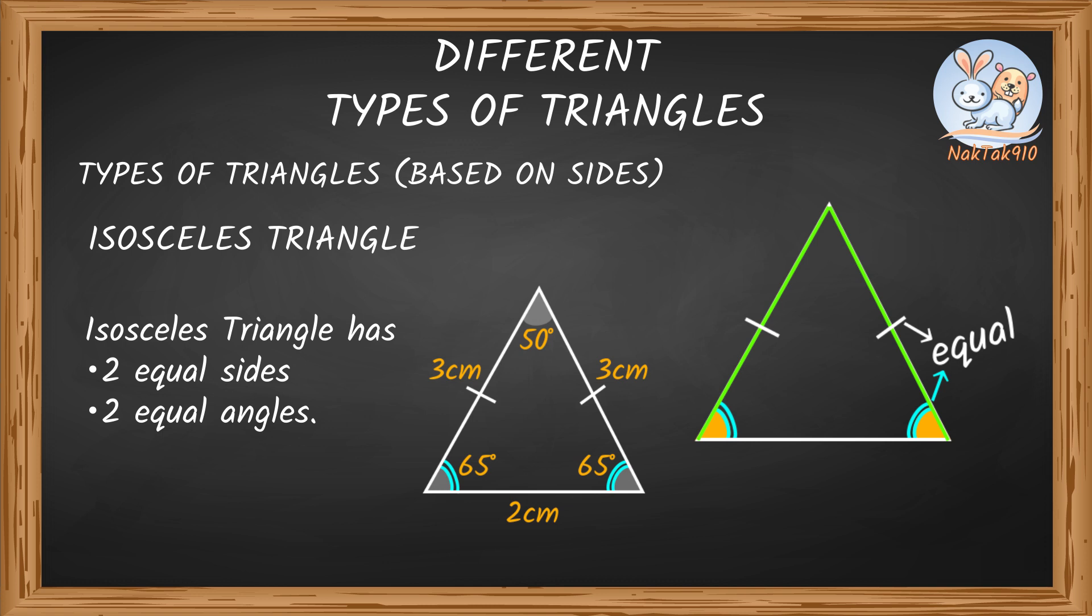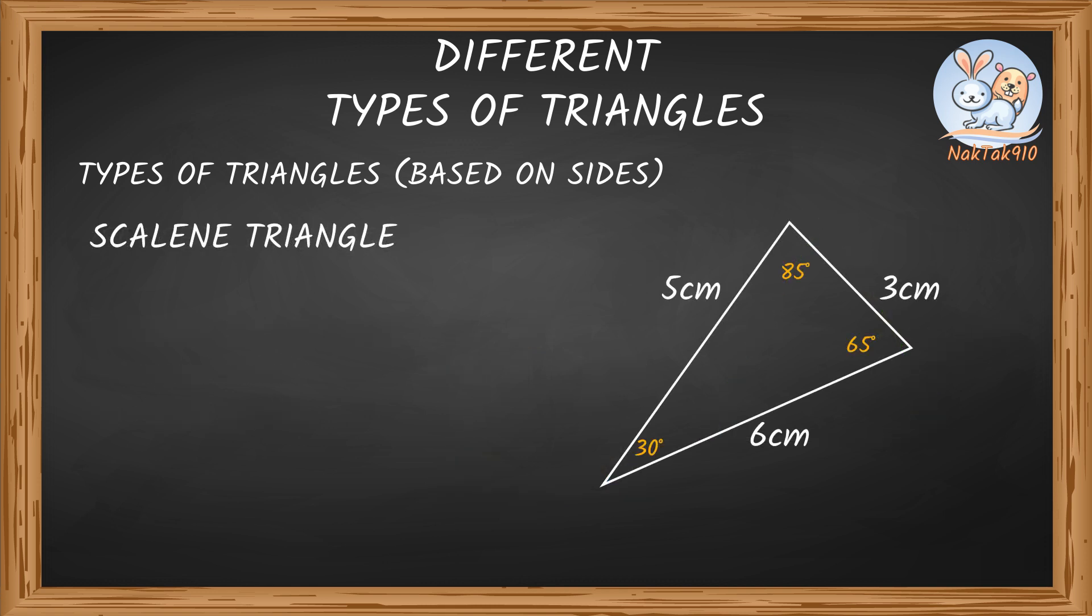Now we learned about three sides are equal, that's equilateral triangle. Two sides are equal, that's isosceles triangle. What if all the sides are different and not equal to each other? Yep, you guessed it. That's a scalene triangle. A triangle in which all three sides are different lengths and all three angles measure different is called a scalene triangle. This is a scalene triangle because all three sides are of different lengths, 5 centimeters, 6 centimeters, and 3 centimeters, and all three angles are of different measures: 30 degrees, 65 degrees, and 85 degrees.